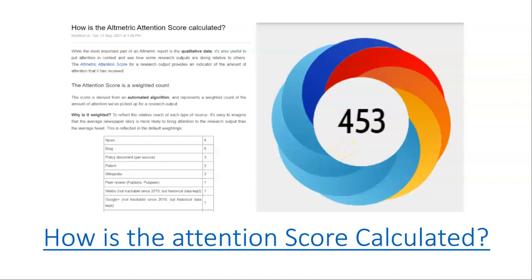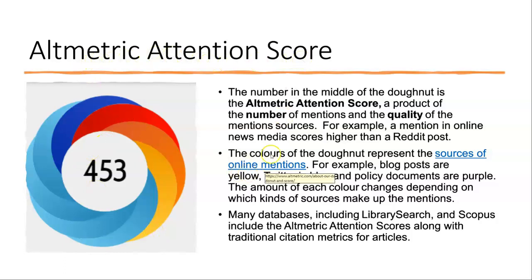So how are the scores calculated? They're calculated by a weighting system — depending on the kind of output, they'll give it a particular score. For example, news will get eight, blogs get five, and so on. They're then calculated and displayed in these donuts. The altmetric attention score itself is displayed as a donut, and the different colors represent different types of sources. For example, blog posts are yellow, Twitter is blue, policy documents are purple, and so on. The colors denote the source, and the number inside is the attention score that the item receives.